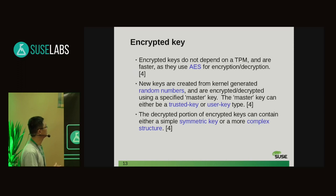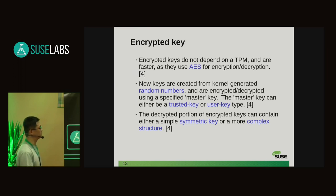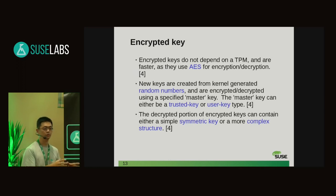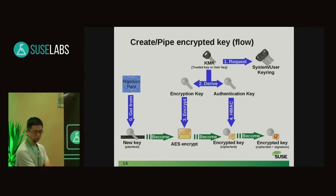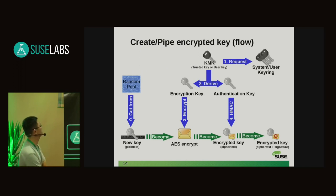The decrypted portion of the encrypted key can contain either a simple symmetric key or a more complex structure — maybe another kind of blob including some salt value. This picture shows another flow about creating — or 'pipe', which is a keyctl command to expose the encrypted key to user space. Everything happens in the kernel.